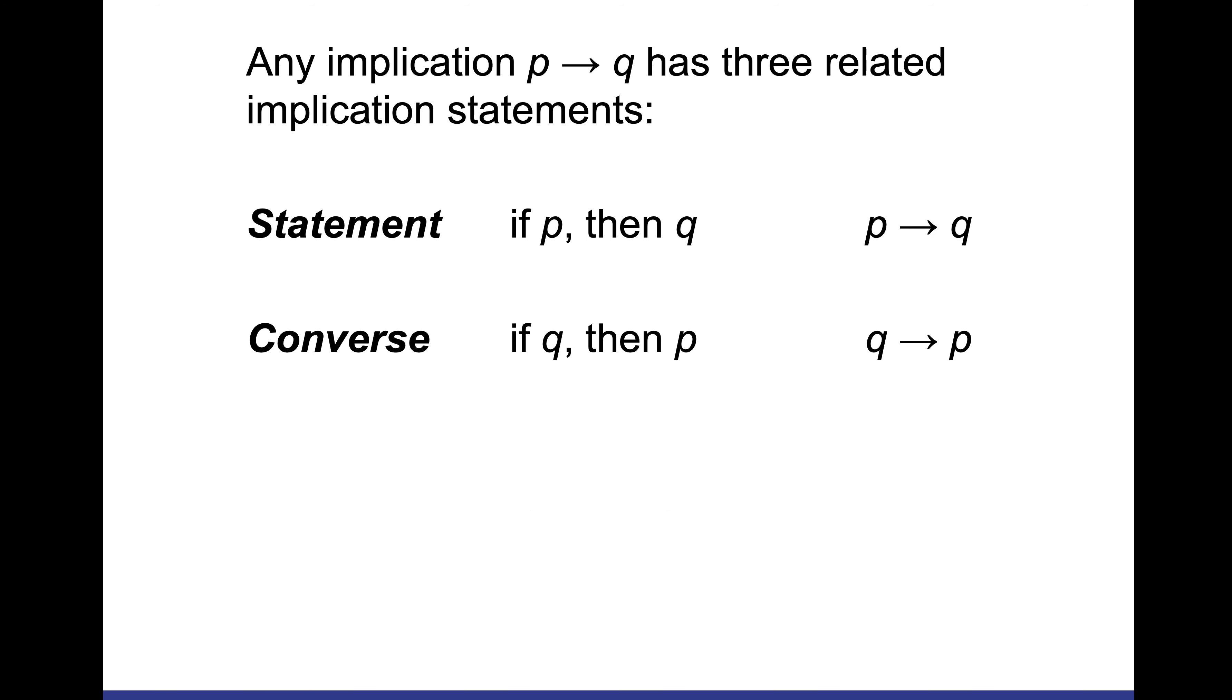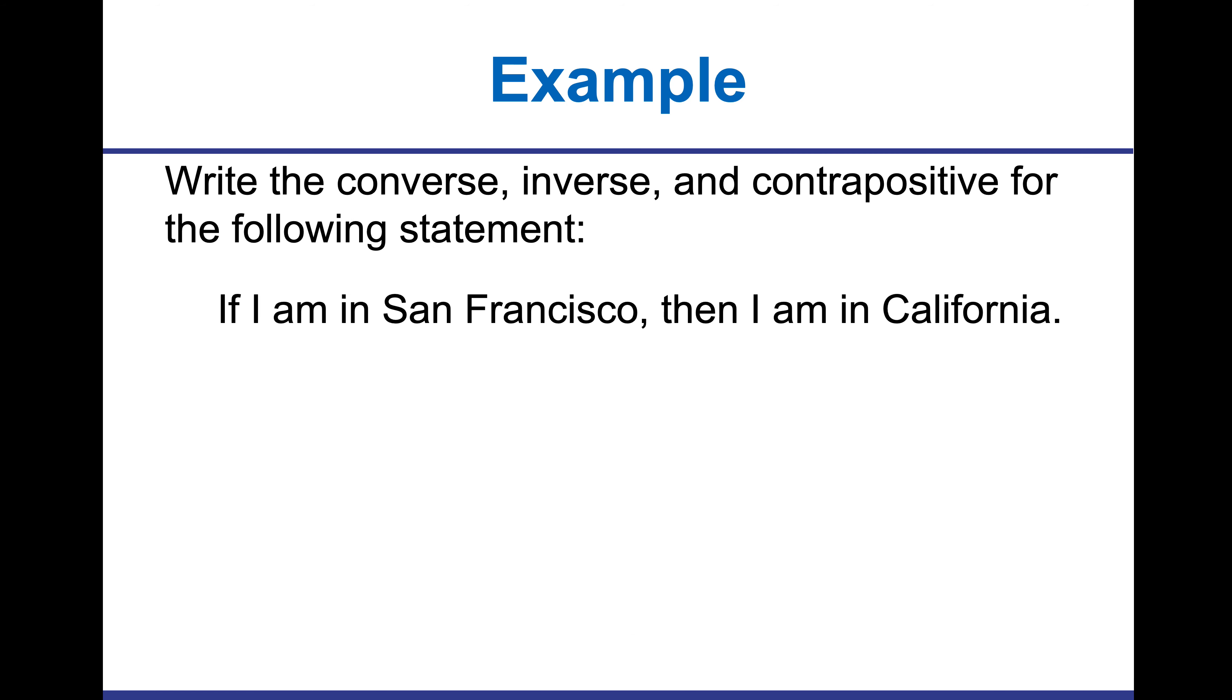The inverse means you start with the original statement, if P then Q, and you make them both negative: not P then not Q. A contrapositive is where you switch the order of P and Q and make them both negative. The contrapositive of if not Q then not P would be if P then Q, because you're always changing whether you're negating that piece or not.